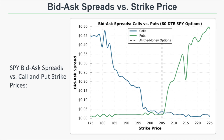Looking at the bid-ask spread for in-the-money, at-the-money, and out-of-the-money calls and puts using SPY options with 60 days to expiration: the at-the-money options near the 205 strike have the narrowest bid-ask spreads, while in-the-money calls and puts have the widest spreads. This is because in-the-money options are more expensive and have less trading volume. Out-of-the-money options get cheaper further out, and cheaper options have a natural ceiling on how wide the spread can be — an option worth 10 cents can't have a 20-cent spread.